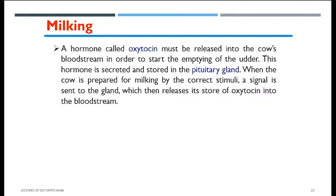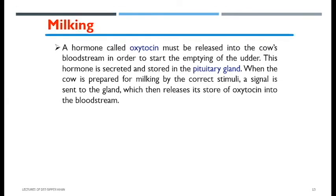Milk actually moves from the gland cistern to the teat cistern and then the teat canal, from where it is sucked out. In hand milking, hands are used to provide pressure and the milk is ejected from the teat canal. In machine milking, cups are used. In primitive cows, the calf sucking on the teat was the natural stimulus. Industrial stimuli include sound-associated stimuli or other sensation-based stimuli used to effectively trigger the release of the oxytocin hormone.